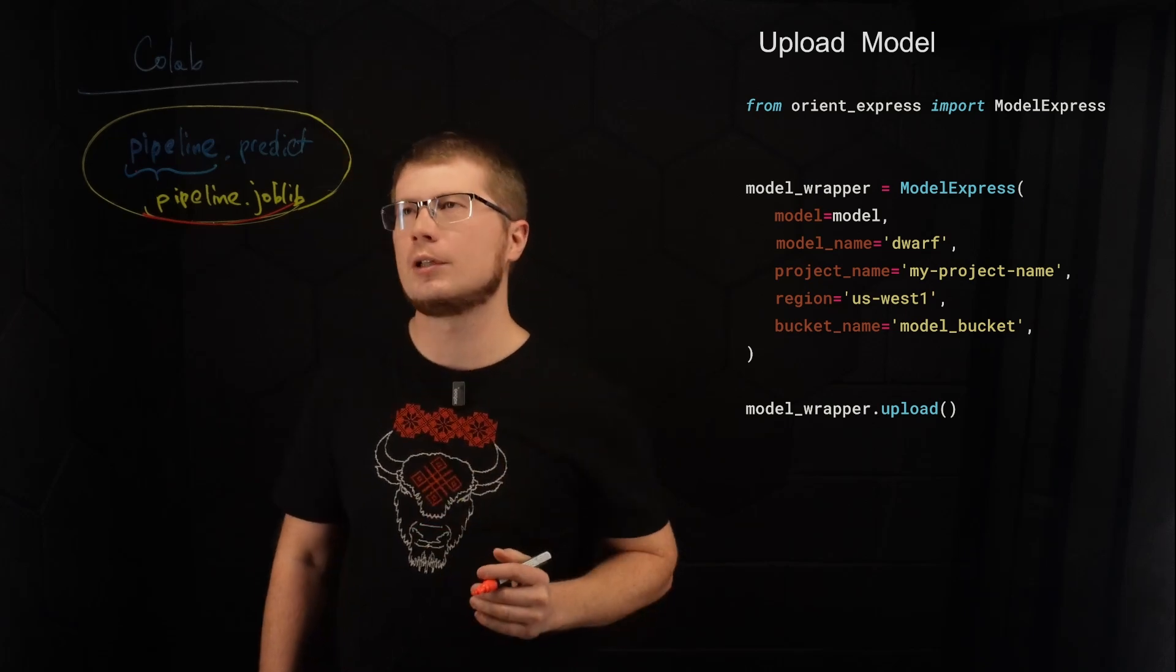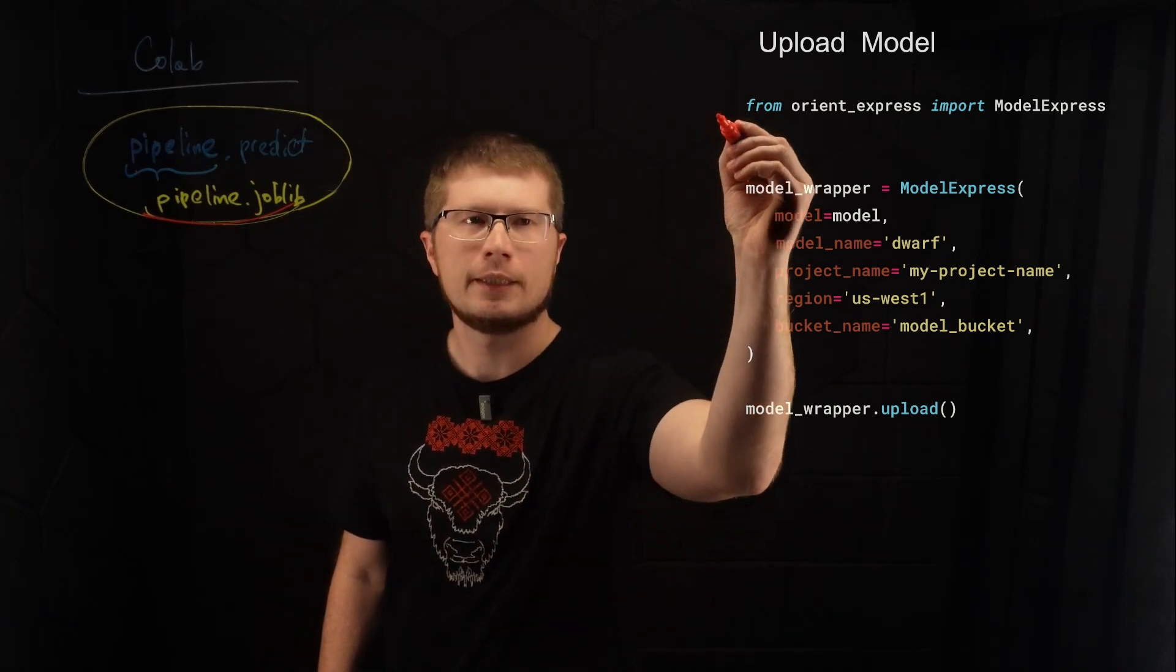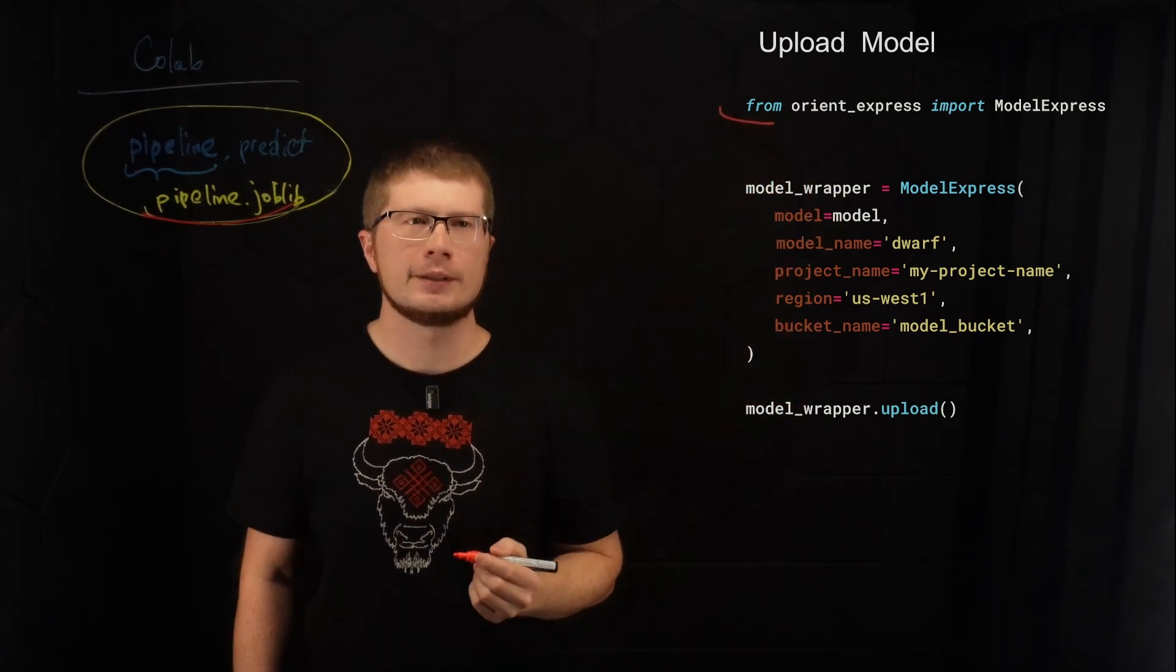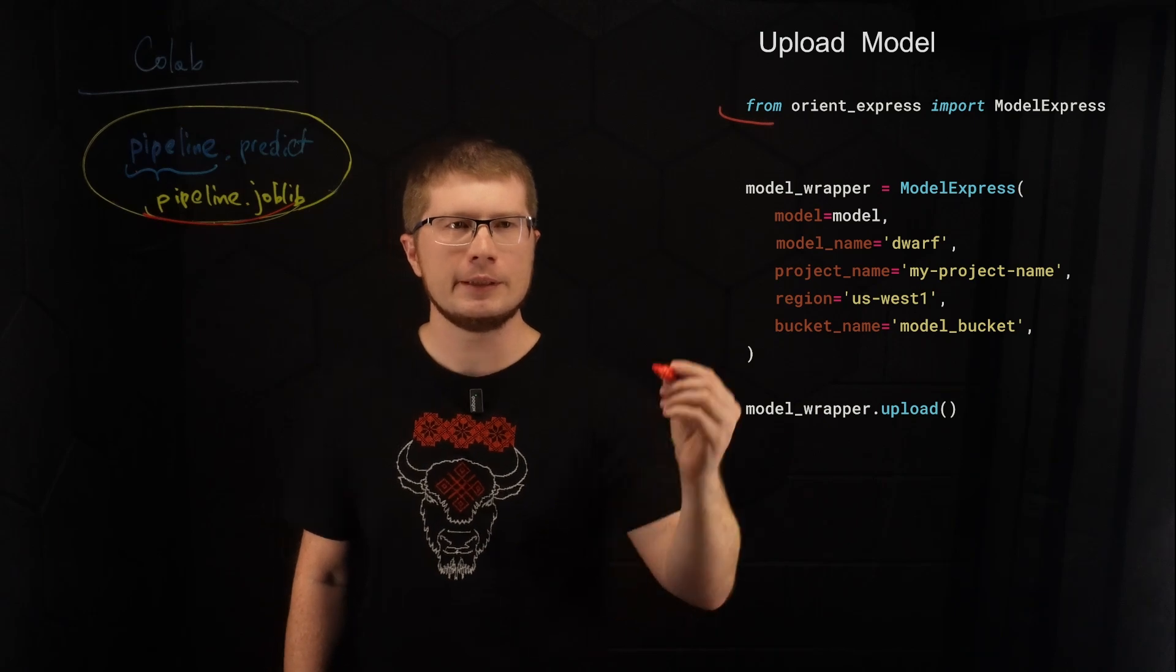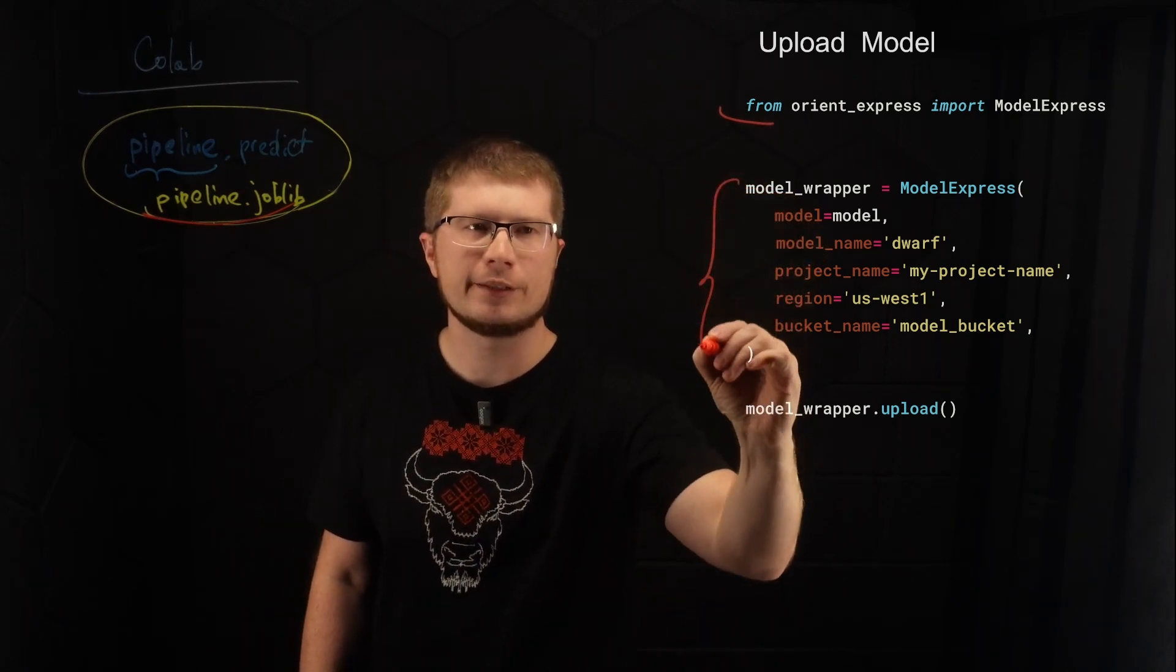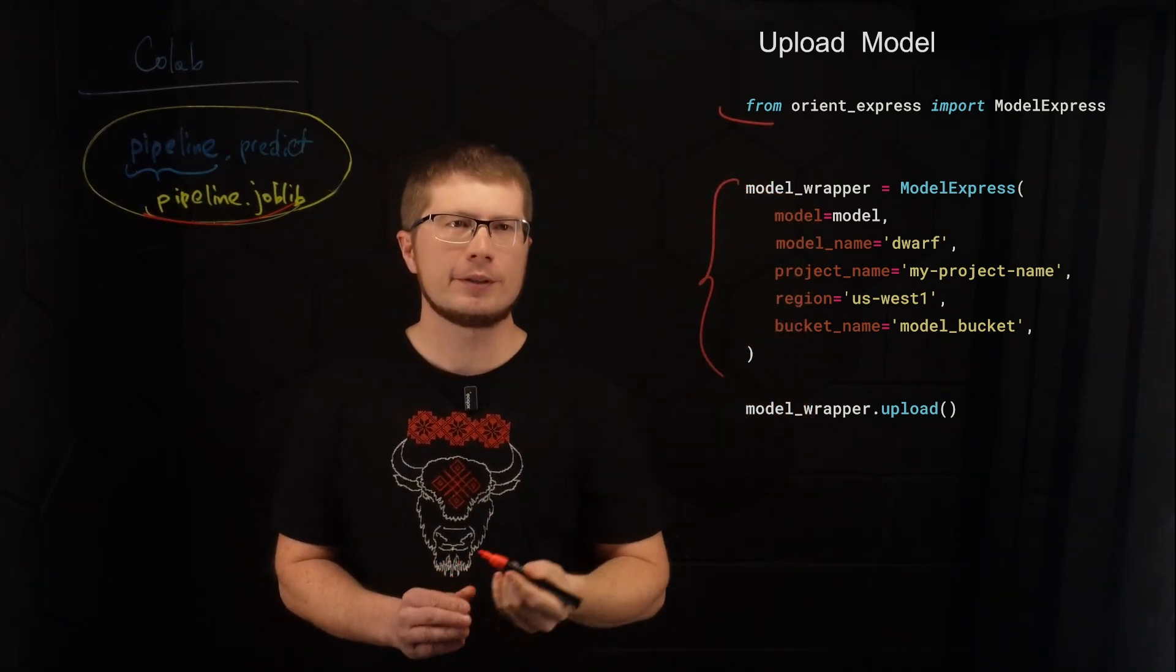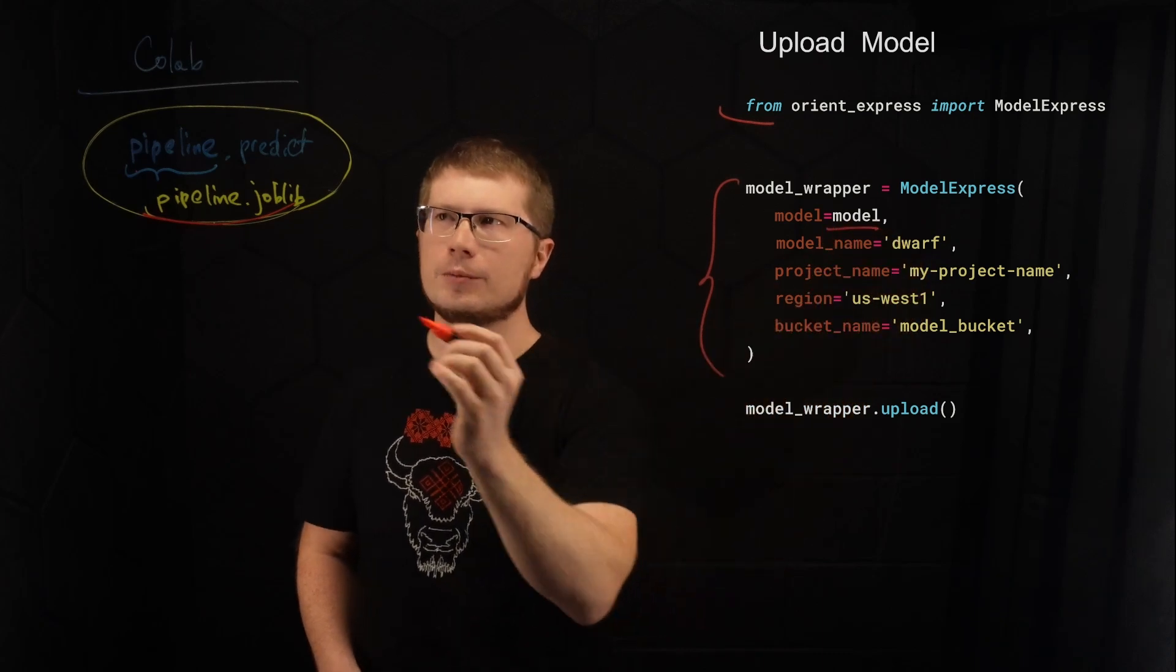Let's use Orient Express to upload our model into Vertex AI model registry. So inside the Colab notebook where we train the model, let's import Orient Express library. And then we initialize the wrapper. The wrapper, the first parameter is the model that we just trained.